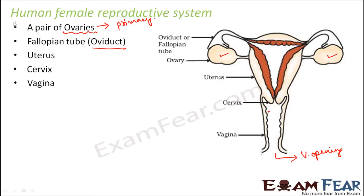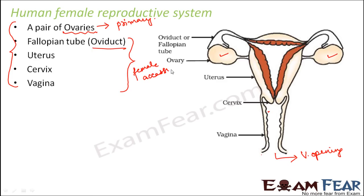These are the important parts which form the human female reproductive system. The ovary is the primary female sex organ, whereas the other parts — the fallopian tube, uterus, cervix, and vagina — are all female accessory ducts. These are the accessory organs that help the primary organ to do its job.